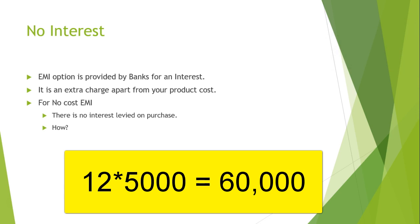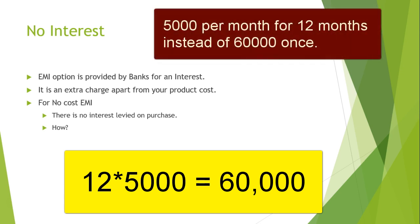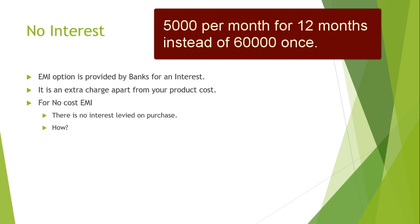For high-end TVs or laptops, the item cost would be around 50,000 or 60,000 rupees, and spending 60,000 in one shot is not possible for everyone. So what people generally do is opt for an EMI option — paying the split amount over many months. If you take a 60,000 rupee item and agree to pay in 12 months, you pay 5,000 each month. Even a person with a net income of 20,000 can afford a 60,000 item this way.